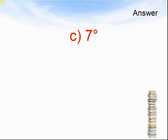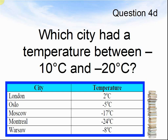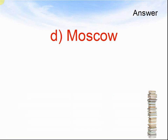Let's look at the next question. Question 4. Which city had a temperature between 10 degrees centigrade and minus 20 degrees centigrade? Pause the video until you are ready to see the answer. The answer was Moscow.